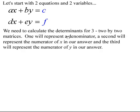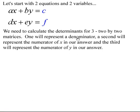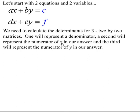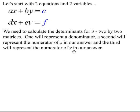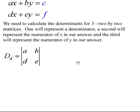I've put the constants in another color to emphasize that we're going to do something with those constants. To calculate, we're going to need three two-by-two matrices. The first one represents a denominator of a fraction. The second matrix represents the numerator of x in our fraction. The third represents the numerator of y in a fraction. Simplify those fractions and we'll get our answers.